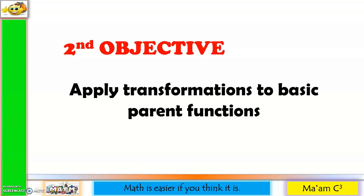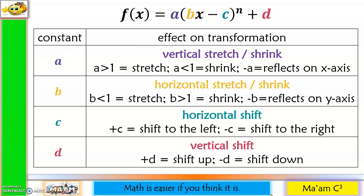Now let us move to our second objective: applying transformations to basic parent functions. The general form is f(x) = a(bx - c)ⁿ + d. The effect of a is a vertical stretch or shrink — if a > 1, the graph stretches vertically; if a < 1, it shrinks vertically. A negative sign on a reflects the graph on the x-axis.